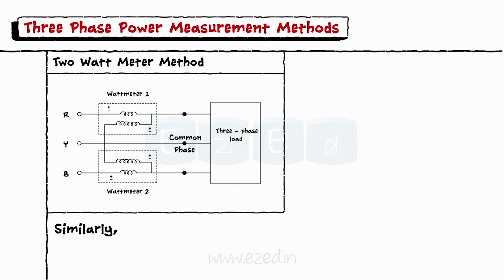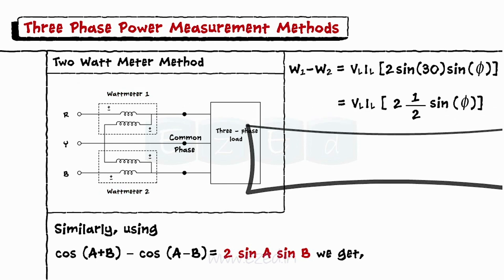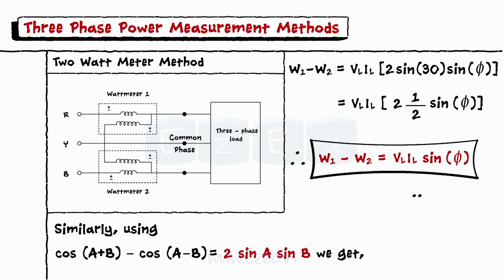Similarly, using the result cos A plus B minus cos A minus B equals 2 sin A sin B, we get W1 minus W2 equals VL IL into 2 sin 30 sin phi, equals VL IL sin phi.